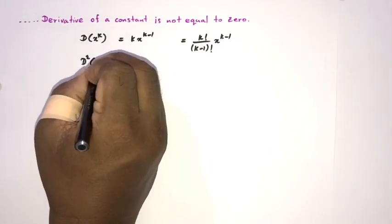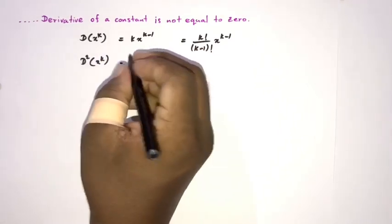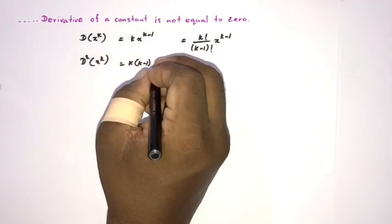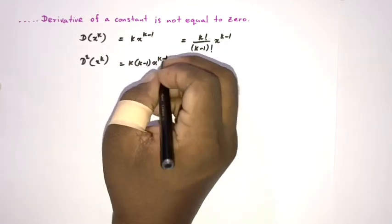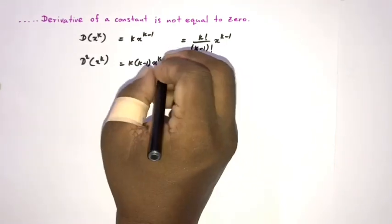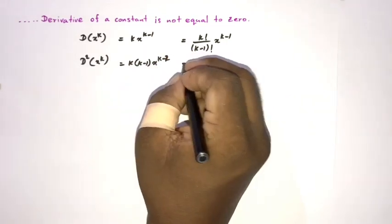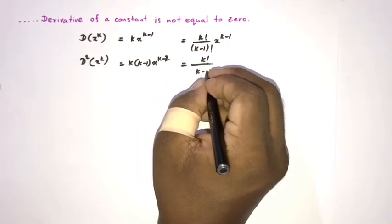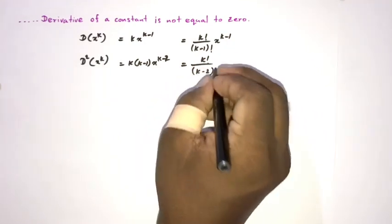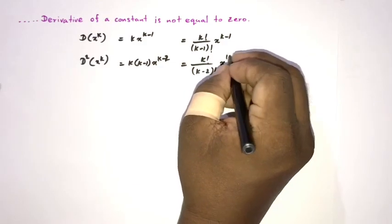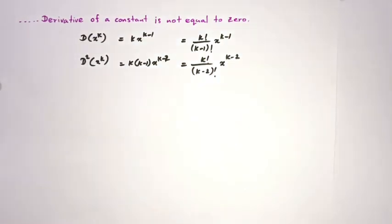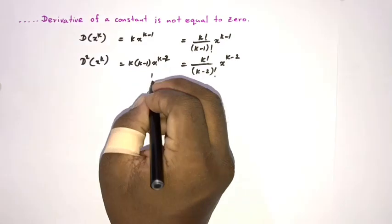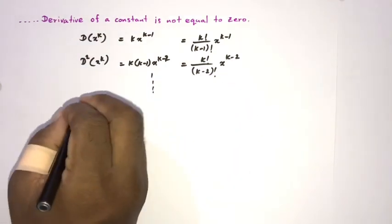If we take the second derivative of x to the k, we get k times (k minus 1) times x to the k minus 2. We can write this as k factorial over (k minus 2) factorial times x to the k minus 2. Looking at this carefully, we see a pattern.